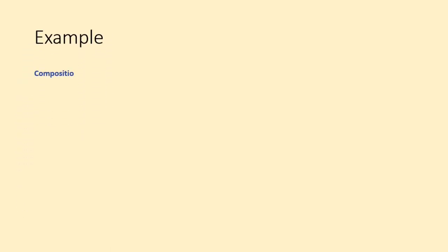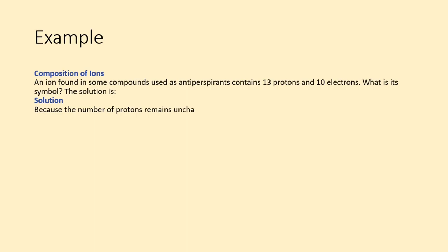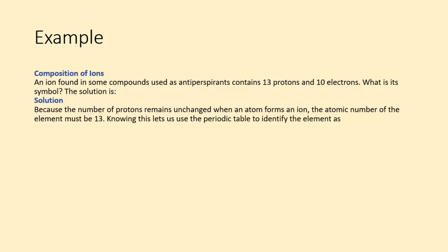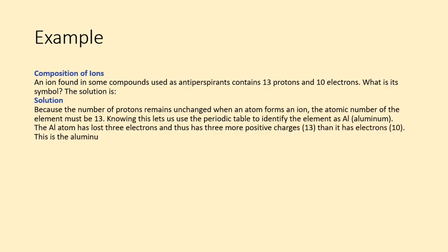Here is an example. An ion found in some compounds used as antiperspirants contains 13 protons and 10 electrons. What is its symbol? The solution is, because the number of protons remains unchanged when an atom forms an ion, the atomic number of the element must be 13. Knowing this lets us use the periodic table to identify the element as aluminum. The aluminum atom has lost three electrons and thus has three more positive charges (13) than it has electrons (10). This is the aluminum cation, Al3+.